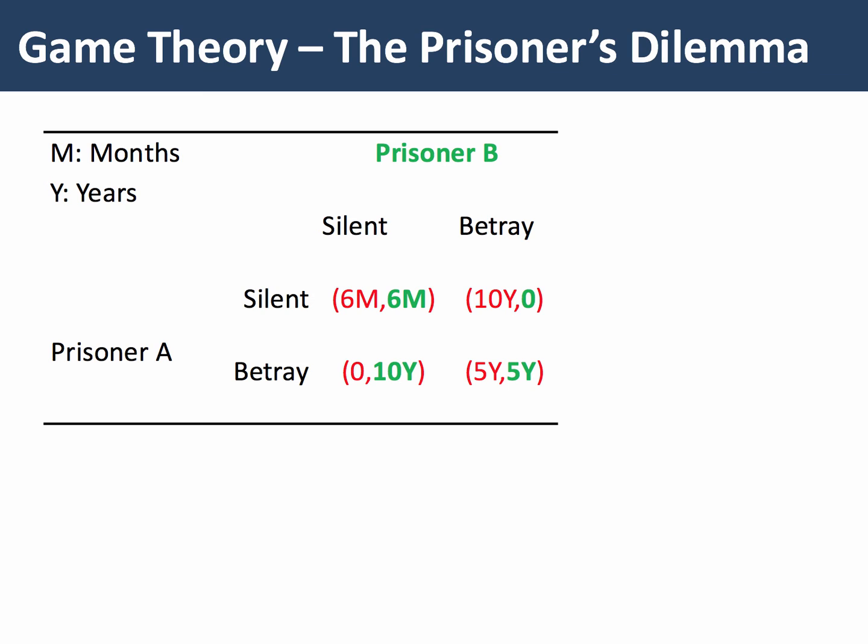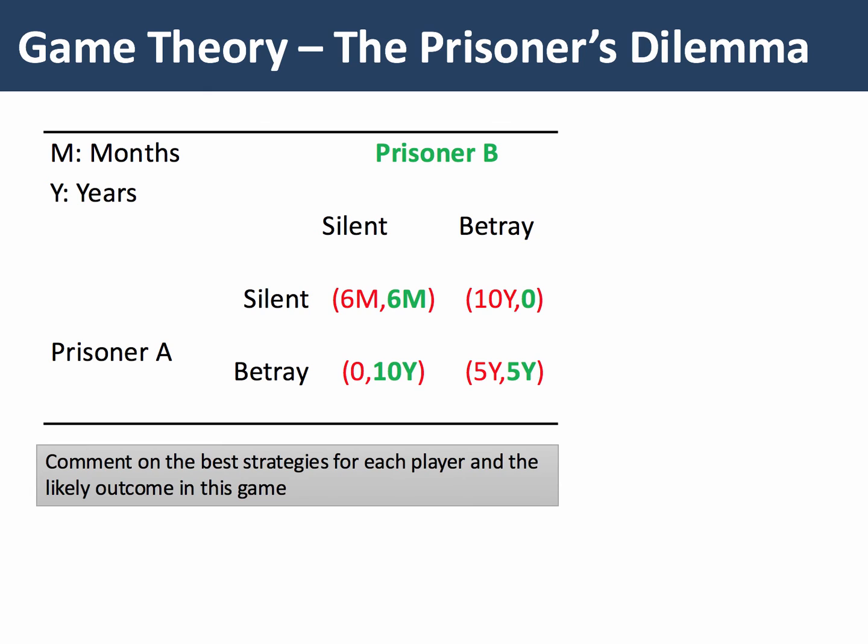That said, even if both prisoners choose to stay silent and indeed could communicate to agree this course of action, any agreement they have to remain silent is fragile. They have an incentive to cheat and betray, and therefore reduce their own spell in custody — indeed, they'd be let off entirely.